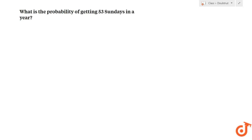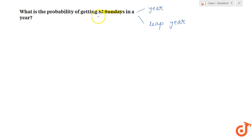In this question, what is the probability of getting 53 Sundays in a year? This could be two questions — in a normal year or in a leap year. Let's try to solve both of them. The question could also be asked as probability of getting 53 Saturdays, or 53 Mondays, or Tuesdays, or Wednesdays — the answer is going to remain the same.